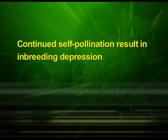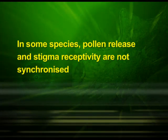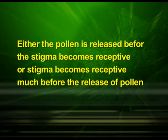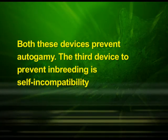Now let us discuss outbreeding devices. Majority of flowering plants produce hermaphrodite flowers and pollen grains are likely to come in contact with the stigma of the same flower. Continued self-pollination results in inbreeding depression. Flowering plants have developed many devices to discourage self-pollination and encourage cross-pollination. In some species, pollen release and stigma receptivity are not synchronized — either the pollen is released before the stigma becomes receptive, or the stigma becomes receptive before the release of pollen. In some other species, the anther and stigma are placed at different positions so that pollen cannot come in contact with the stigma of the same flower. Both these devices prevent autogamy.